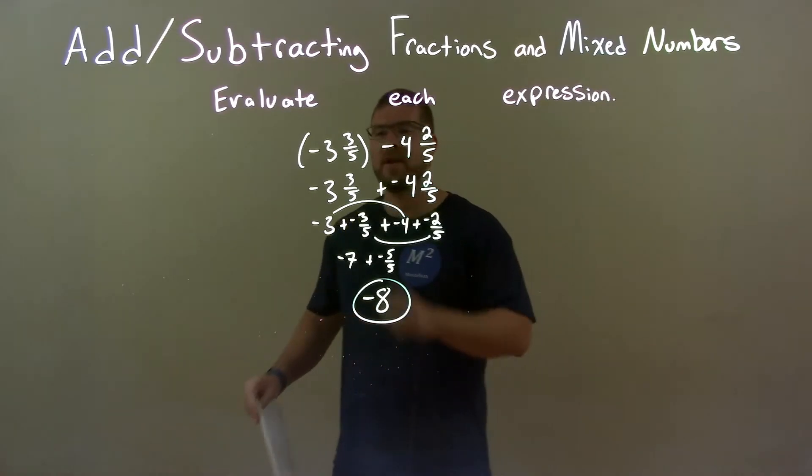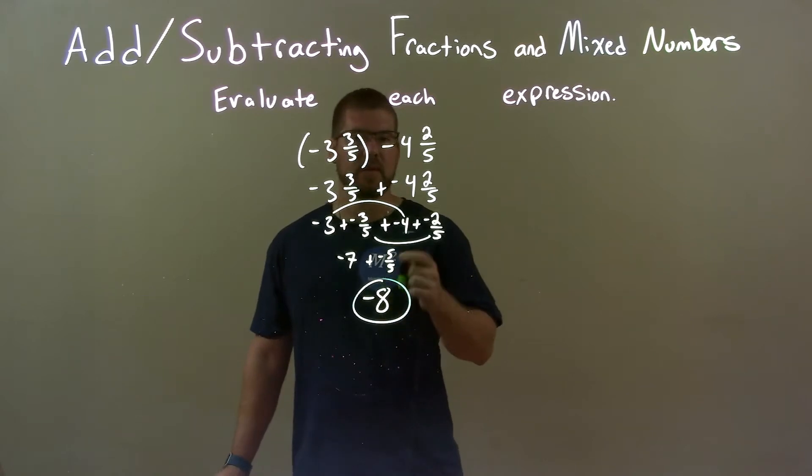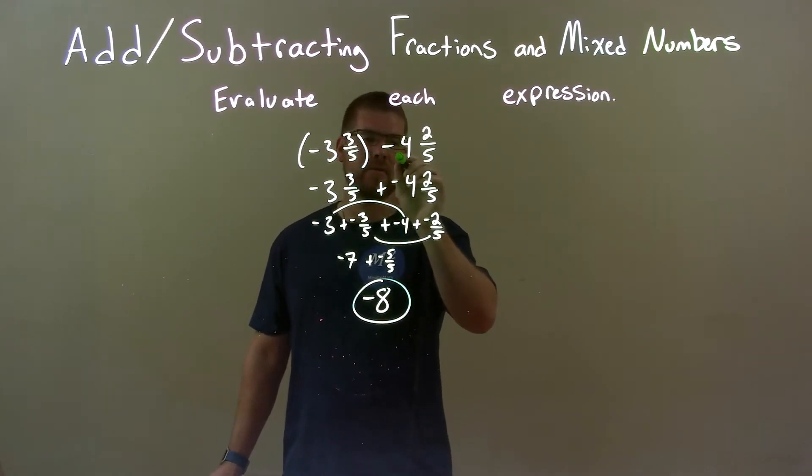Quick recap, we're given negative 3 and 3 fifths minus 4 and 2 fifths. What I did here, I made the subtraction into adding a negative. Then I broke them up.